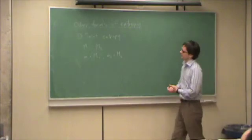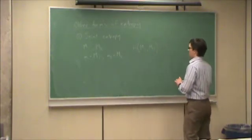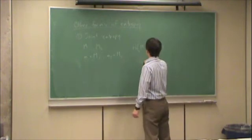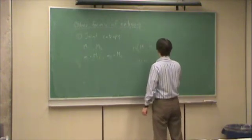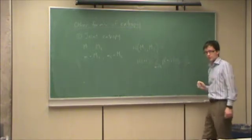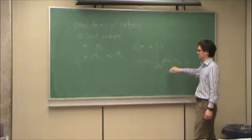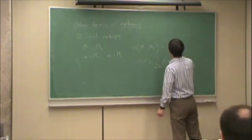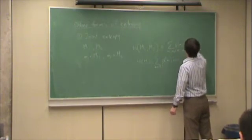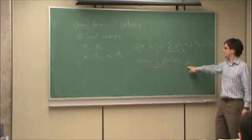The joint entropy of message sets m1 and m2, I can write this as h(m1, m2). Let's remember the form of entropy, h of m is equal to the sum of all possible messages, probability of m, log base 2, 1 over probability of m. We would expect that the joint entropy would make use of the joint probability in much the same way.